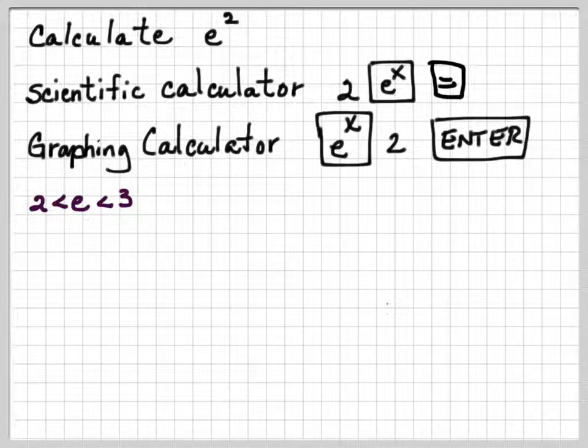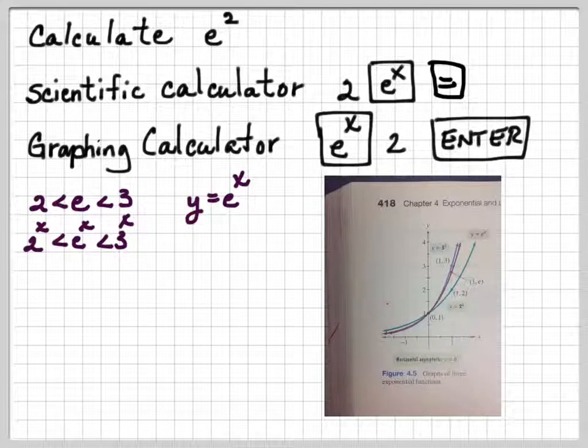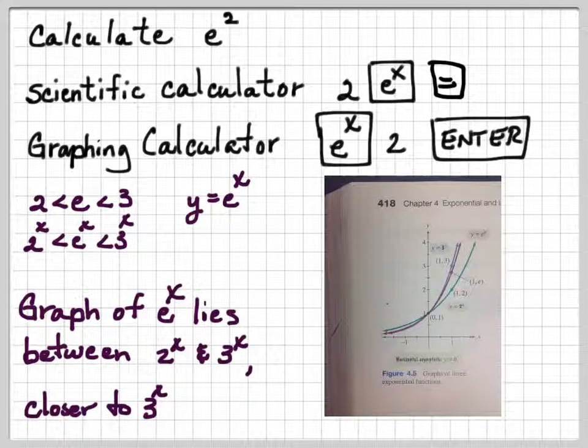If you notice, e is between 2 and 3, approximately 2.7 something. And y equals e to the x is going to lie between y equals 2 to the x power and y equals 3 to the x power. If you take a look at this graph, the green is 2 to the x power, the blue is 3 to the x power. Notice because the base is a number larger than 2, it's going to be a steeper graph. And the purple is y equals e to the x. You notice it is closer to 3 raised to the x power than 2 to the x power.